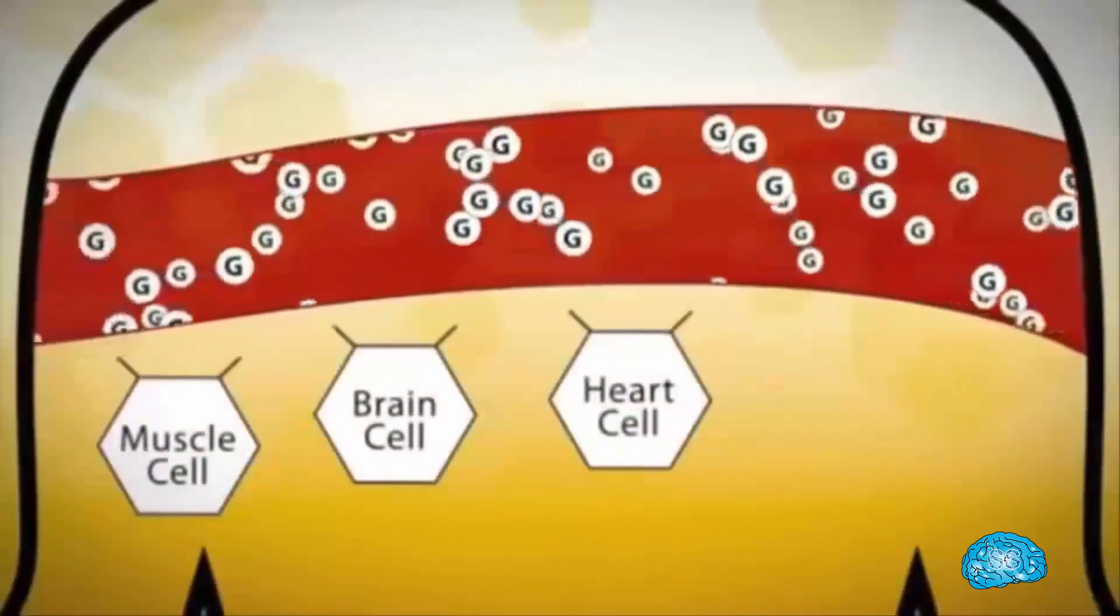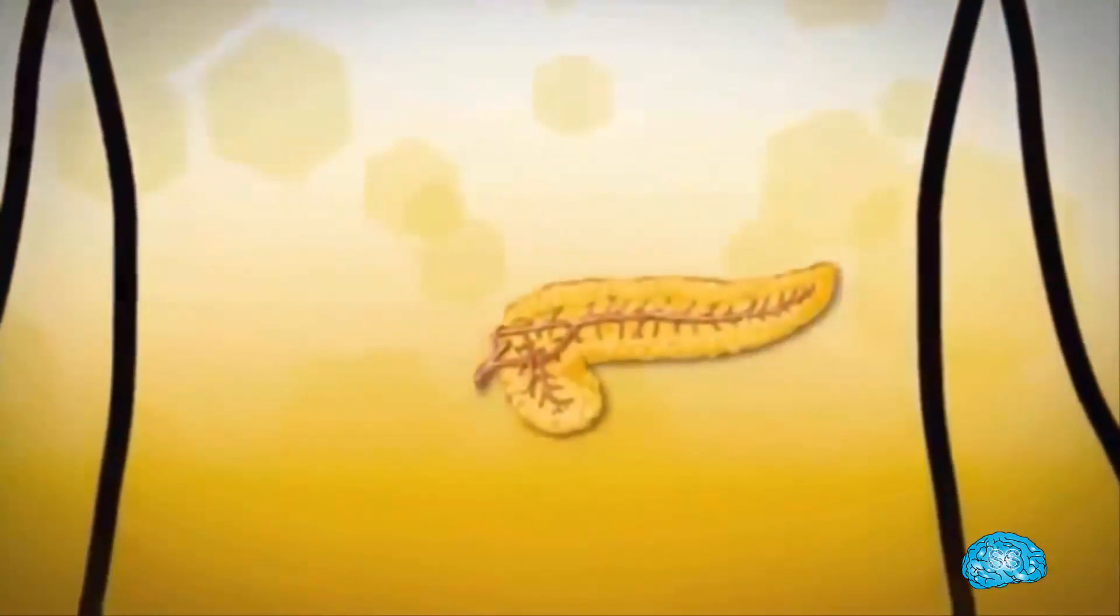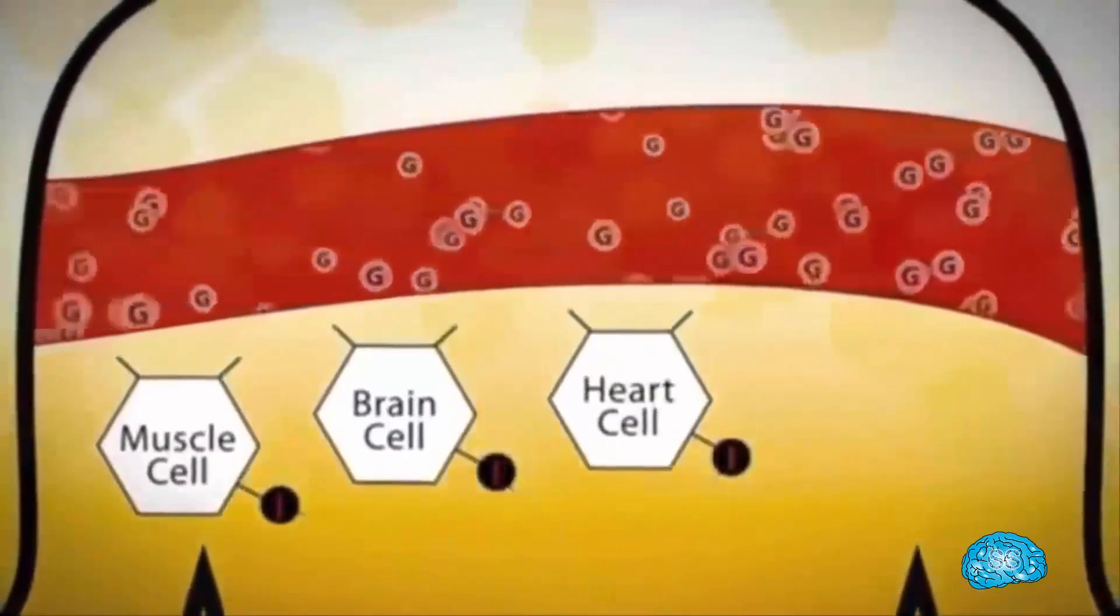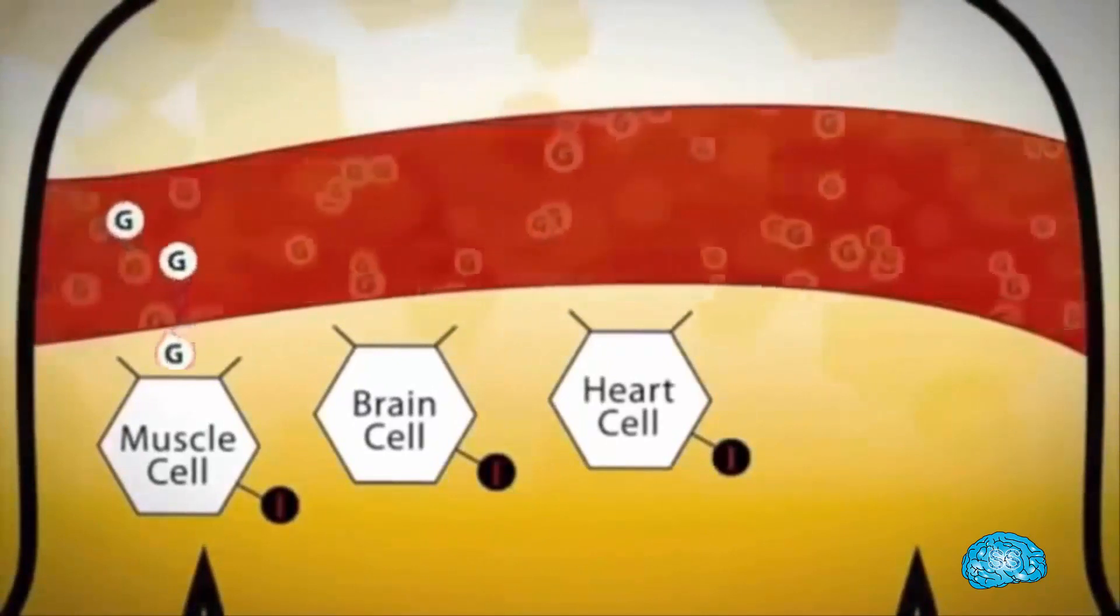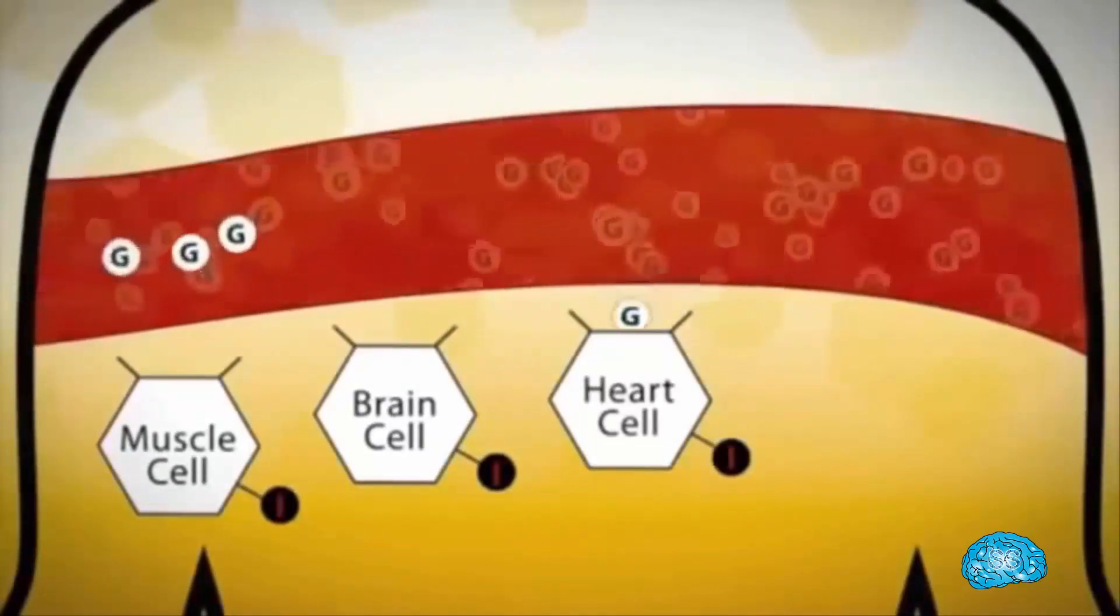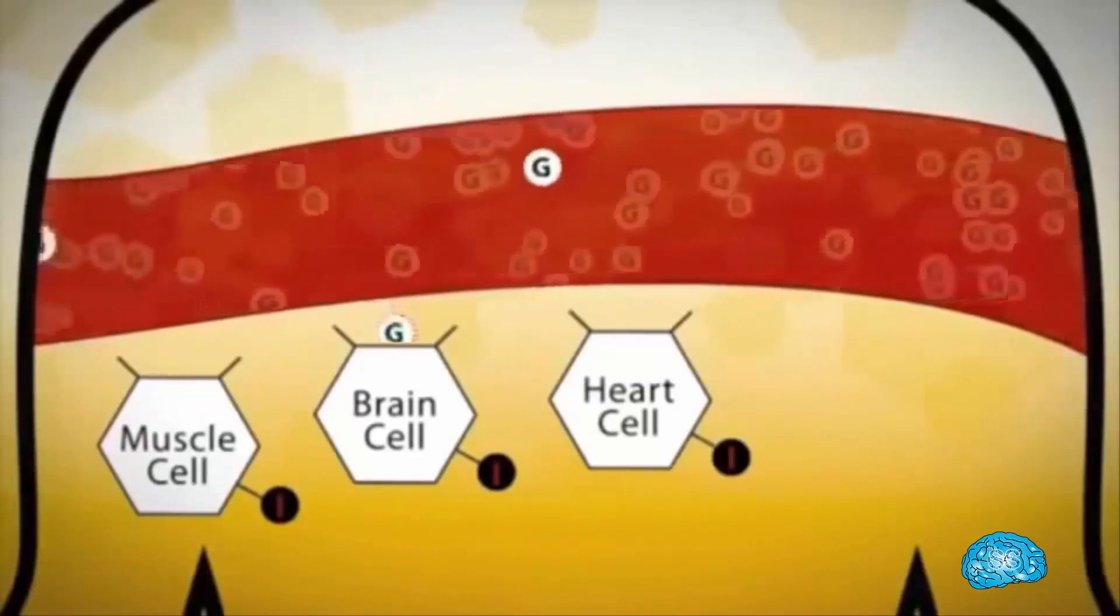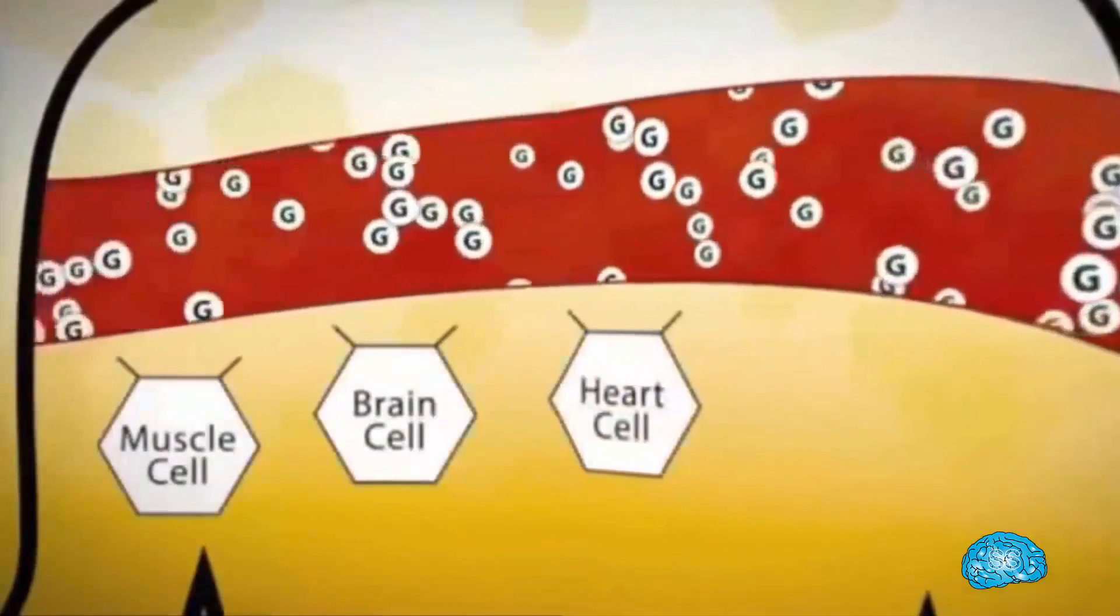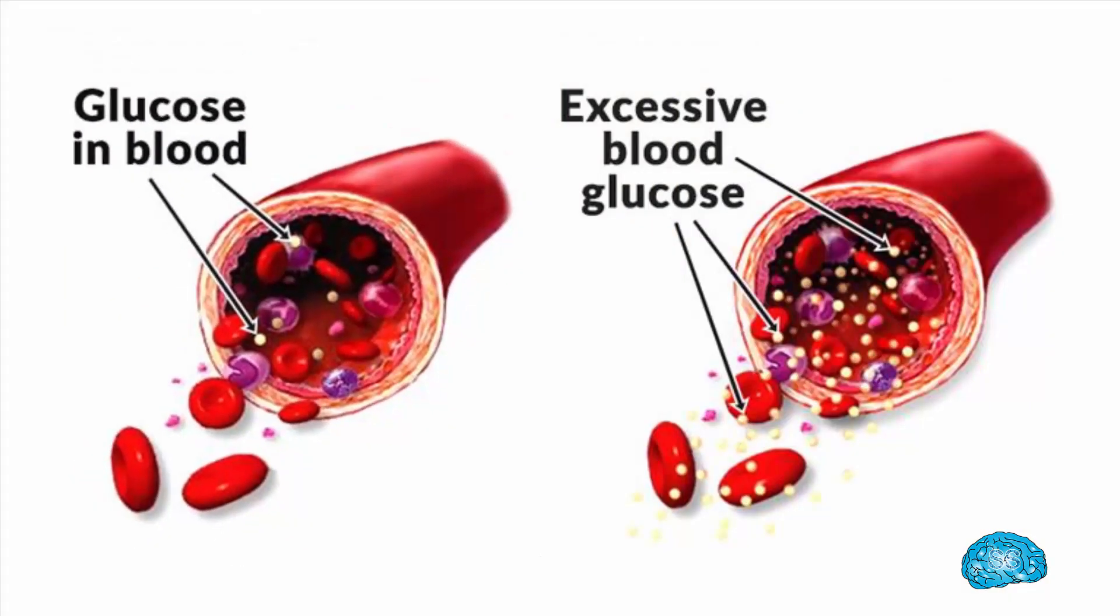As glucose moves through the bloodstream, our pancreas produces a hormone called insulin. Insulin opens up the gate and allows glucose to enter each and every cell to get the required energy. Without insulin, the cells cannot be fed. It's like the gates are closed without insulin. And also, without insulin, glucose level in blood will increase rapidly and this will lead to diabetes.